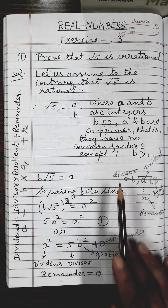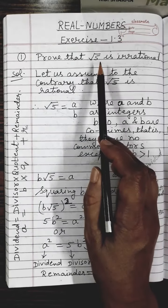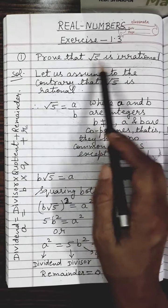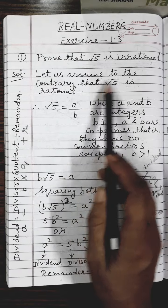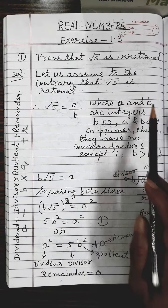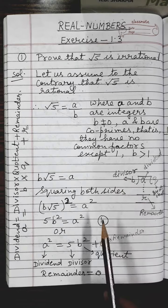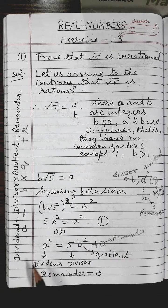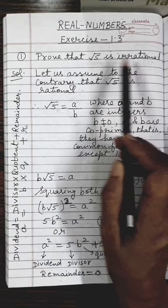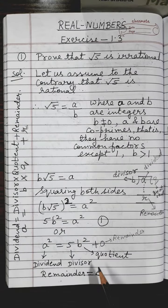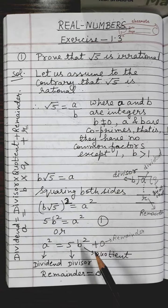These types of questions we do by contradiction method. What is meant by contradiction method — you have to understand first. In this method, we assume the opposite of whatever is required to be proved. Here, we have to prove that root 5 is irrational, so we will assume that root 5 is rational. Based on this assumption, we will start doing our working, and in the end step we will come across a statement which is incorrect. Then we will say that this incorrect statement is because of our incorrect assumption, and therefore we conclude that the correct statement is the one we are required to prove.